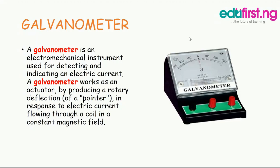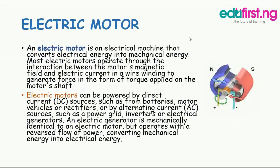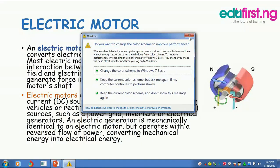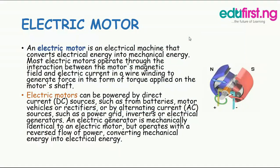Electroplating is basically the process of plating a metal onto another by electrolysis, mostly to prevent corrosion of metal or for decorative purposes. The process uses an electric current to reduce the metal cations to develop a thin, coherent metal coating on the electrode. The process used in electroplating is called electro deposition.